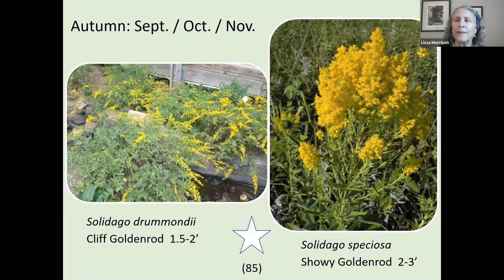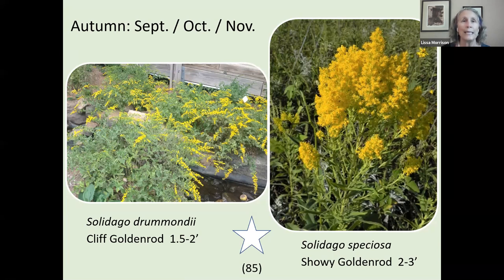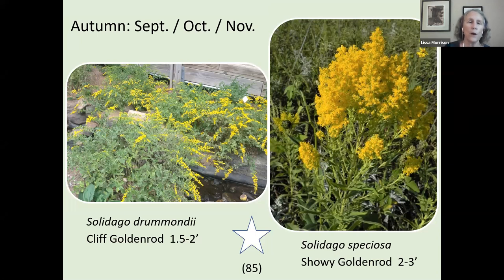Now we're moving into autumn. When you drive around in August, September, October, and November, there are far fewer flowers blooming. Even in the world of natives, the selection is much slimmer in fall. Goldenrod is a superstar — it is host for 85 different butterflies and moths. There are many kinds of goldenrods; only about four are well-behaved. Both cliff goldenrod, which looks like a tidy shrub, and Solidago speciosa are on my well-behaved natives list.